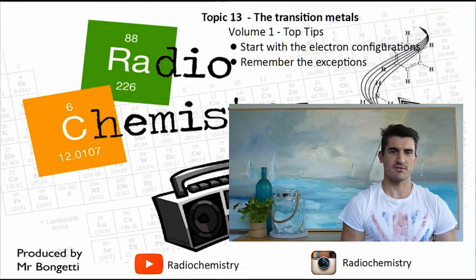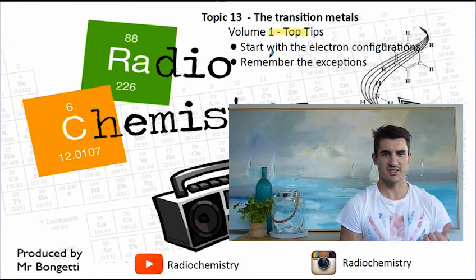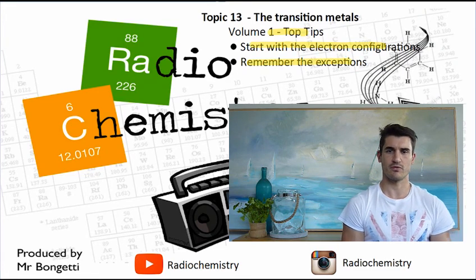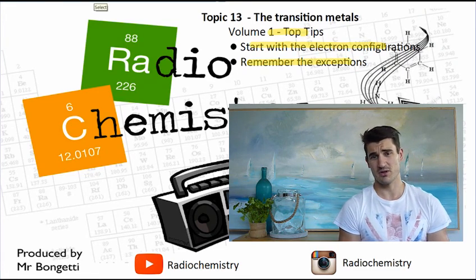Okay, some top tips for volume one for the transition metals. Start with the electron configuration. Remove them from the 4s first. Remember those exceptions. Thanks for watching guys. Don't forget, drop a like on the video. Subscribe if you're new, and I'll see you next time.